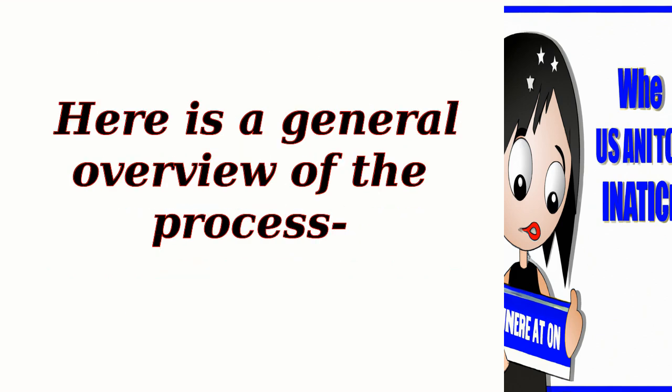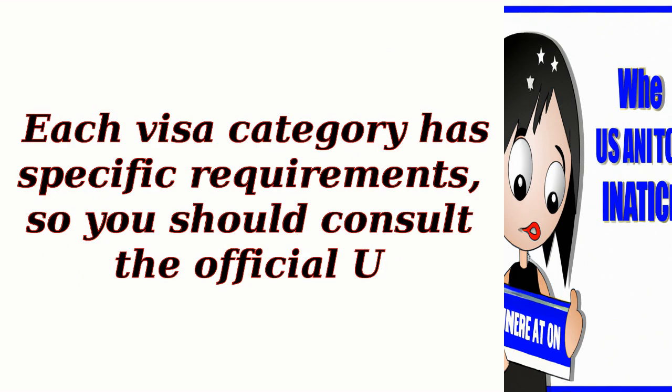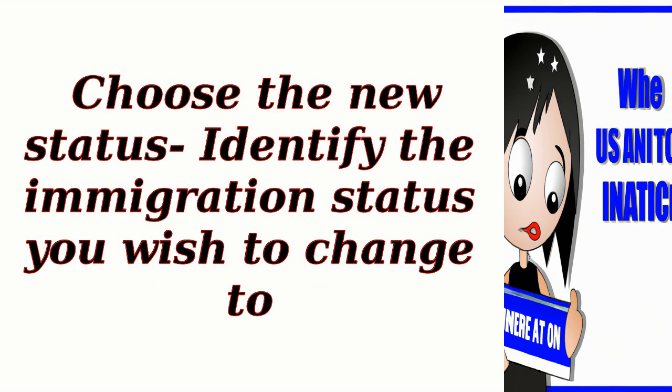Here is a general overview of the process. First, determine eligibility — you need to determine if you are eligible to change your status. Each visa category has specific requirements, so you should consult the official U.S. Citizenship and Immigration Services website or speak to an immigration attorney for accurate information.